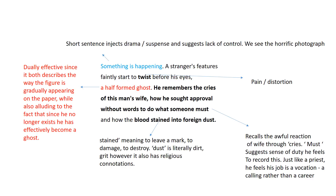'Cries' as a word choice again conveys pain and suffering. 'He sought approval without words to do what someone must' really recalls the awful reaction of the wife and shows the photographer's sense of duty — he has to record this. Back to the idea of a priest: his job is a vocation, a calling rather than just a career. 'Stained' means to leave a mark, to damage and destroy — which is what war has done to its victims, but also to the psyche of the war photographer himself. 'Dust' carries literal meaning but also religious connotations.